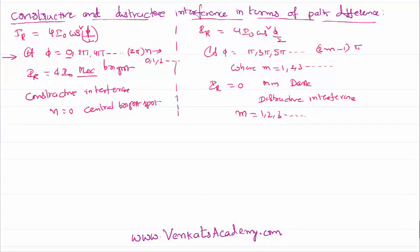This is called constructive interference, and this is called destructive interference. If you want to show it on a graph how it varies, let us take the phase on the x-axis: 0, π, 2π, 3π, 4π, 5π, and so on.